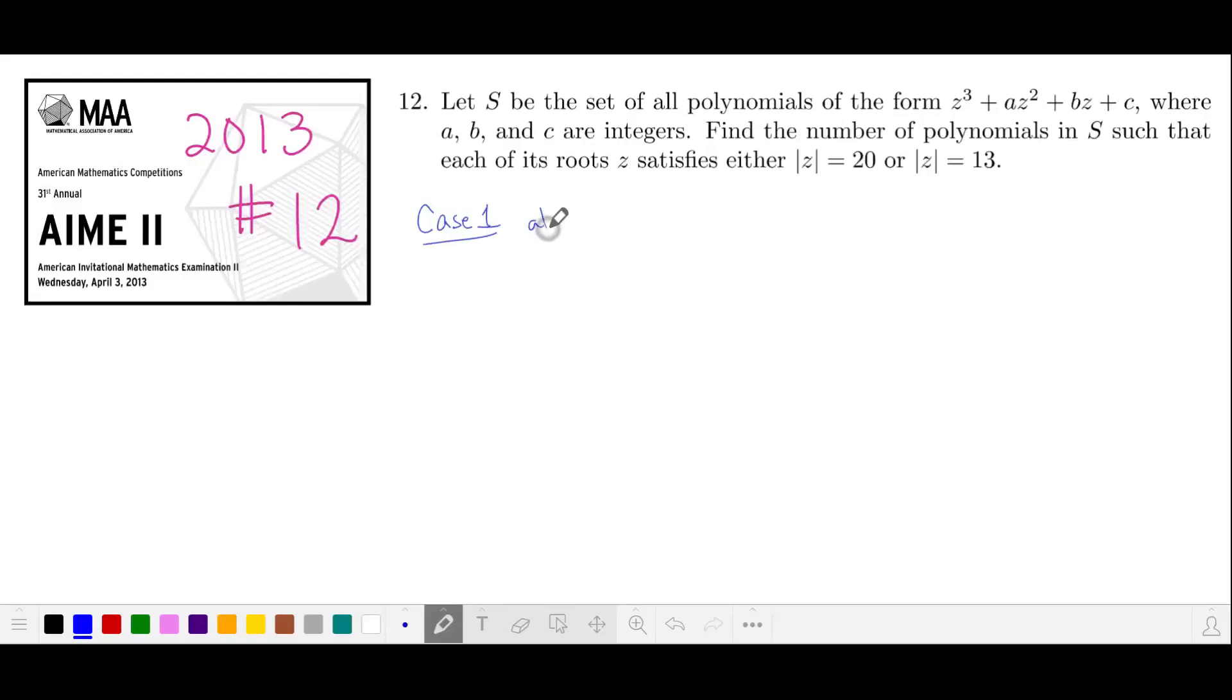Let's consider the case where all three roots are real numbers. This means that all three of our solutions in z must come from this set because the magnitude is either 20 or 13.